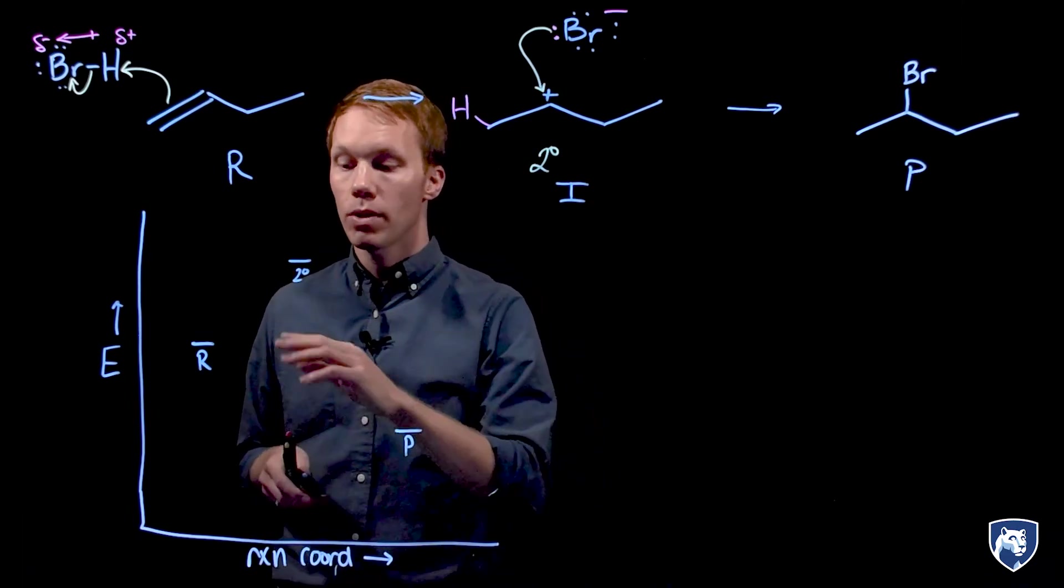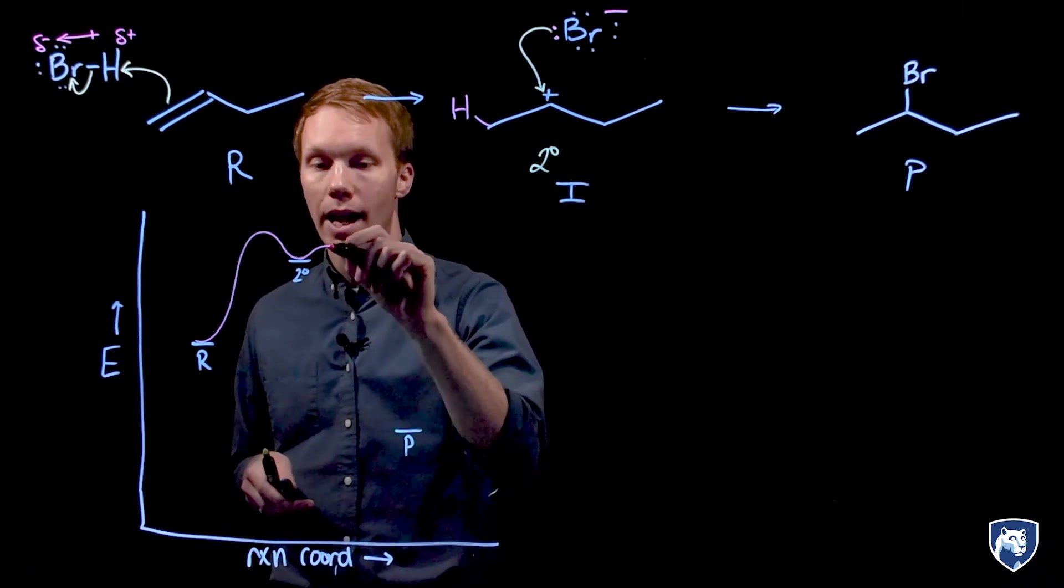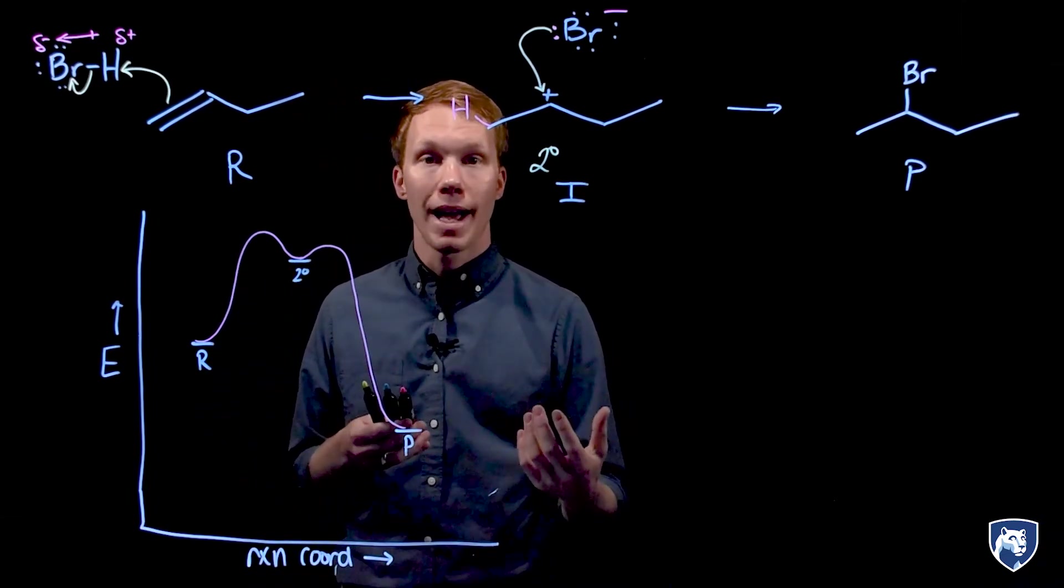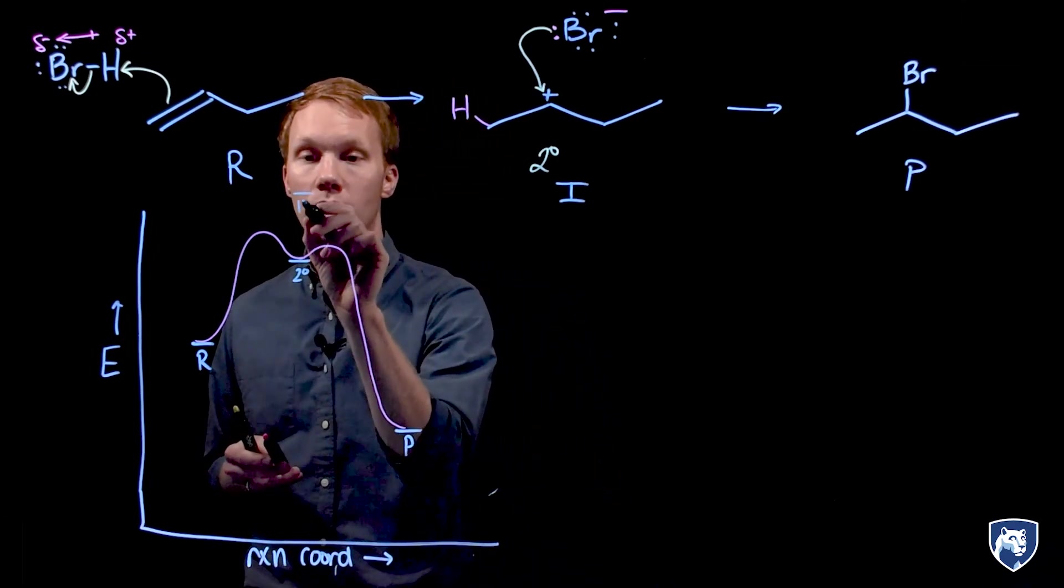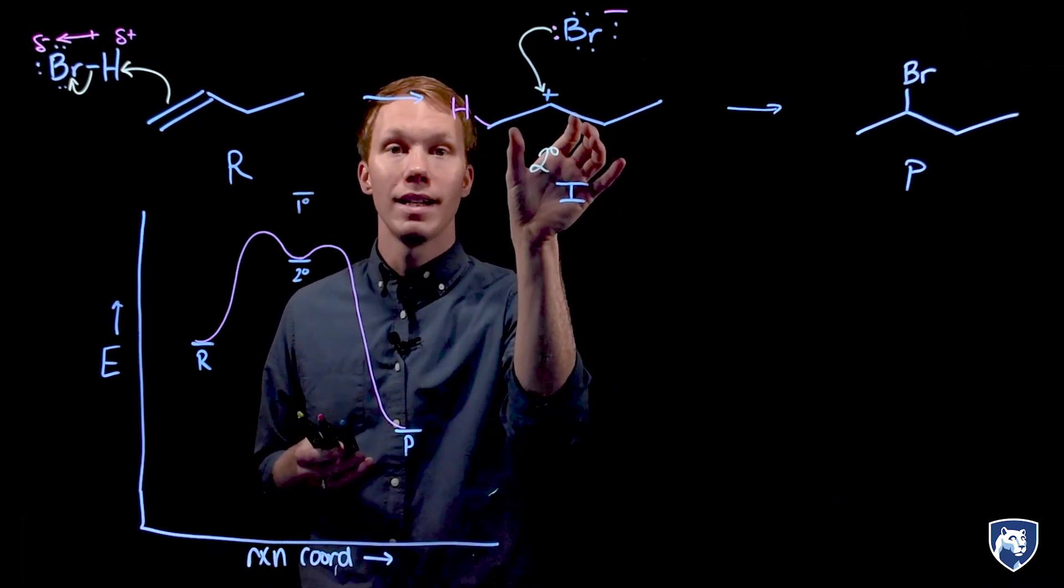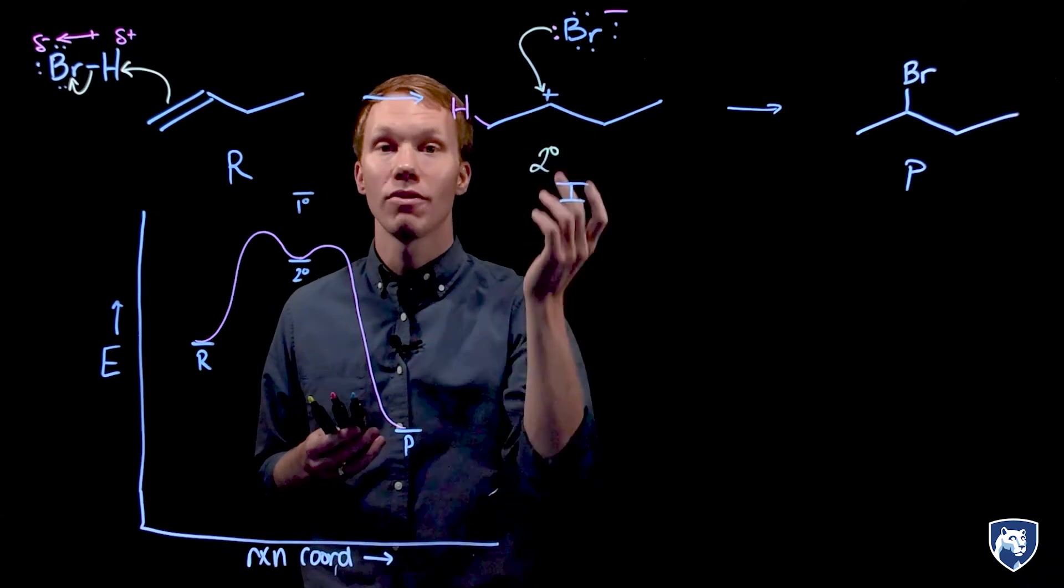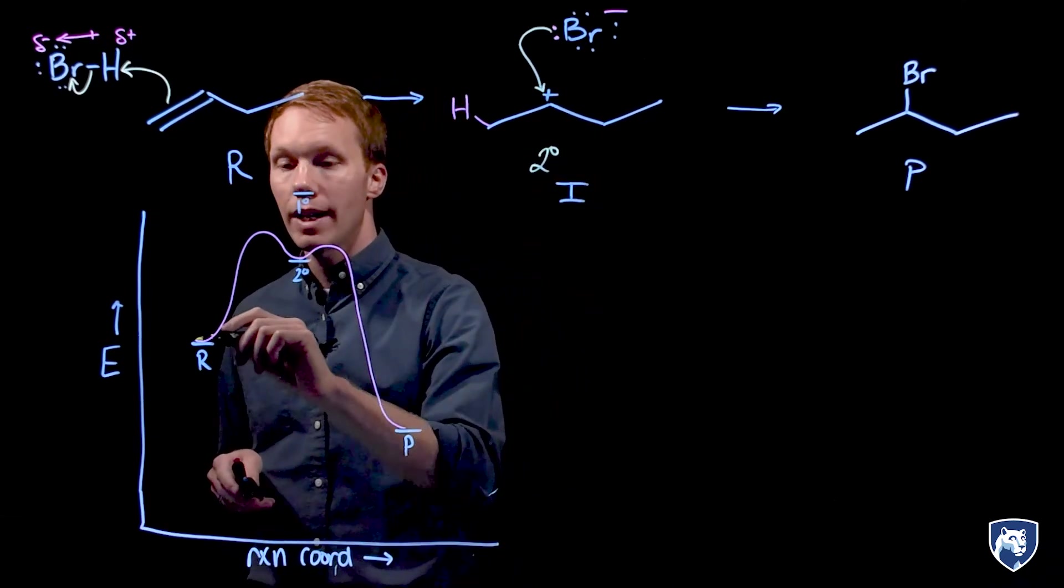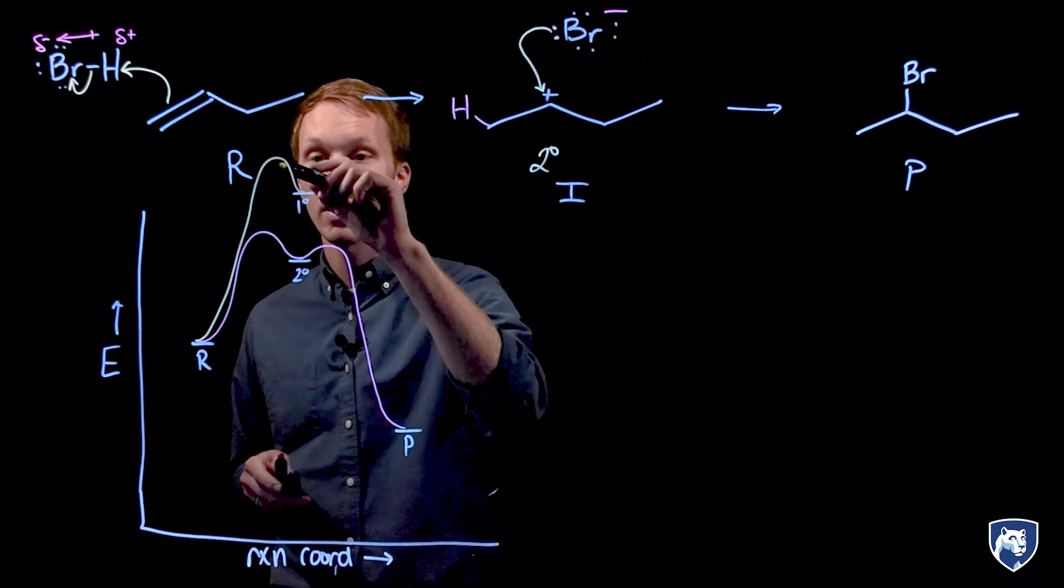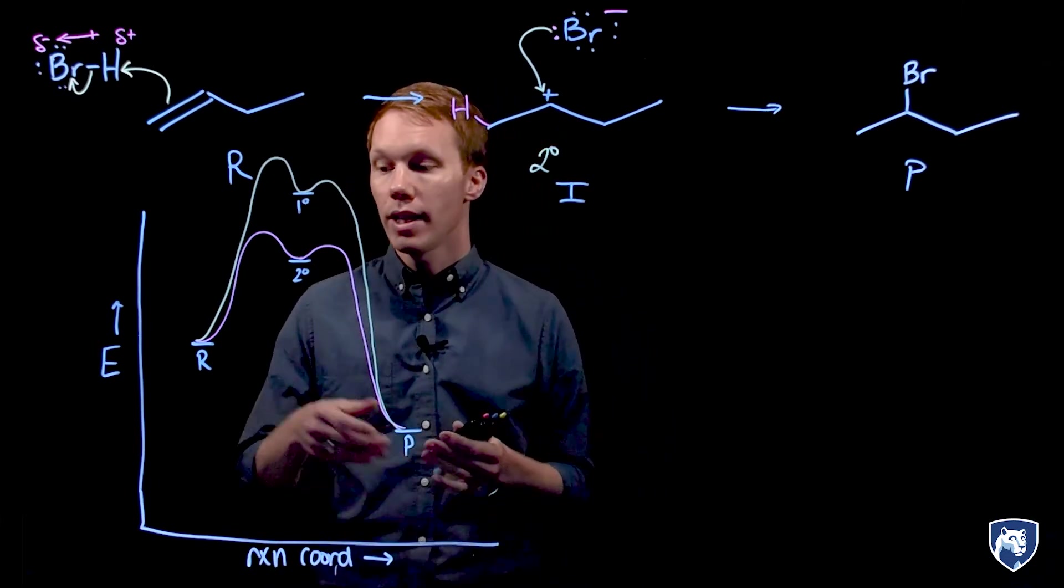So if we connect the dots between our reactants, our intermediates, and products, we would find that we would climb the hill to get to the secondary carbocation and then step two is product formation. If we compare that to the other carbocation which was primary, primary carbocations are higher in energy than secondary carbocations. This is due to the fact that alkyl groups are inductive donors. They donate electron density and that is stabilizing to a site that is deficient of electron density. When we connect this intermediate, we have an even higher hill to climb to get there before we form product. So the rate determining step of this reaction is carbocation formation.